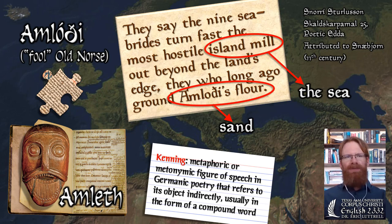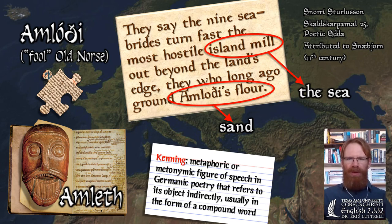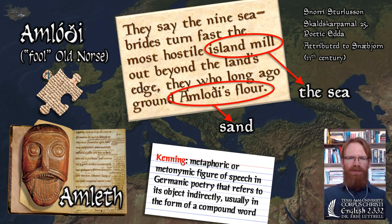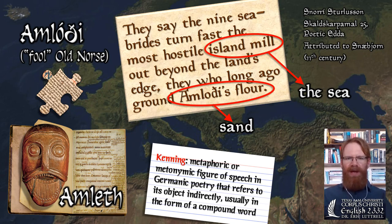He's someone who describes the real world in metaphorical, poetic language. In Anglo-Saxon literature, this is called a kenning — though it's the kind of thing we see in all Germanic literature, especially northern Germanic literature. A kenning is a metaphoric or metonymic figure of speech that refers to an object indirectly, usually in the form of a compound word. 'Amlovi's flour' is a kenning for sand; 'the island mill' is a kenning for sea.